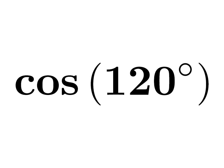In this video, we will learn to find the value of cosine of 120 degrees. As 120 degrees is equal to 2 times 60 degrees, cosine of 120 degrees is equal to cosine of 2 times 60 degrees.